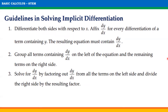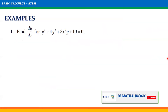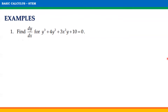And third step: solve for dy/dx by factoring out dy/dx from all the terms on the left side and divide the right side by the resulting factor. Now, let us apply these steps in finding the derivative using implicit differentiation in the following examples. For the first example, find dy/dx of y³ + 4y² + 3x²y + 10 = 0.